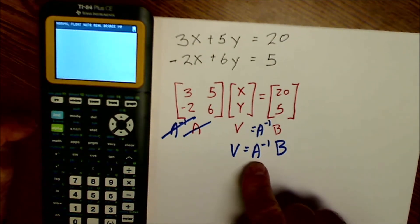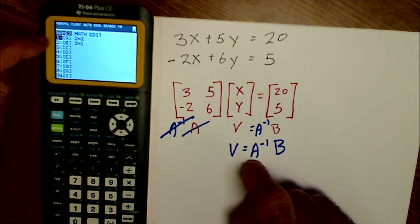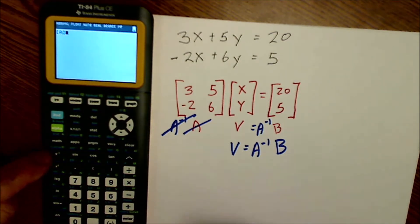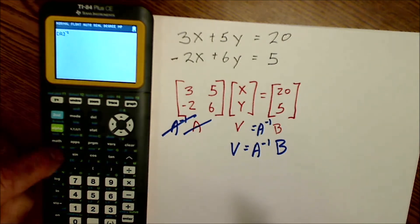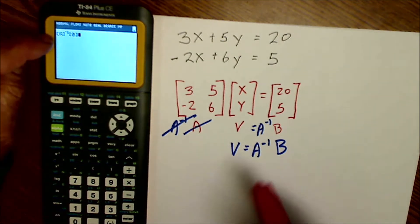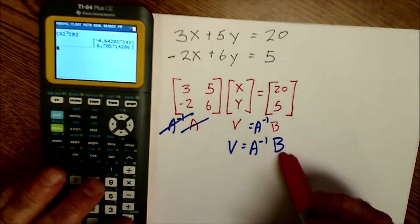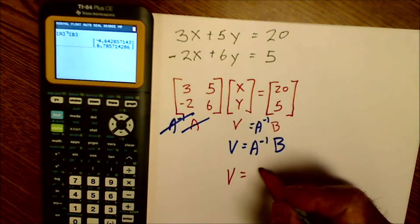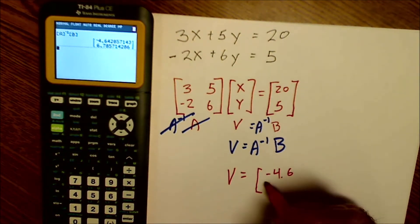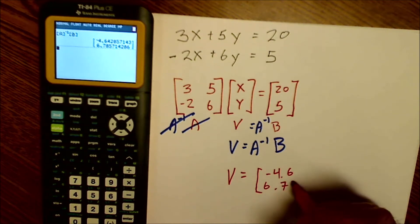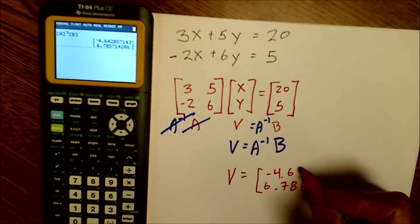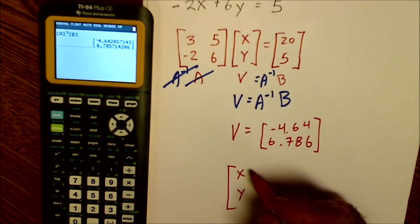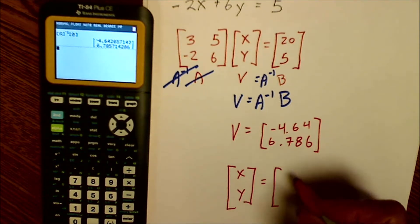And then now I want to find the inverse of matrix A. So I'm going to select that matrix, which is number one. So I could just hit enter if it's highlighted to the inverse right here. So matrix A to the inverse, matrix two. So the inverse of A times B, and I hit enter and it gives me a variable matrix is going to be equal to that right there. Negative 4.6 and 6.786. Put one more significant digit in here.